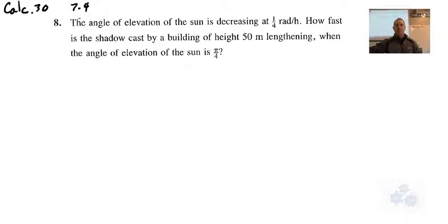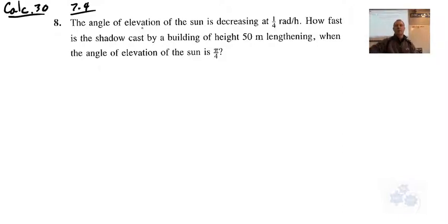Okay, so 7.4 — we're talking about derivatives and related rates. Here's the question in your textbook: the angle of elevation of the sun is decreasing at one quarter radians per hour.